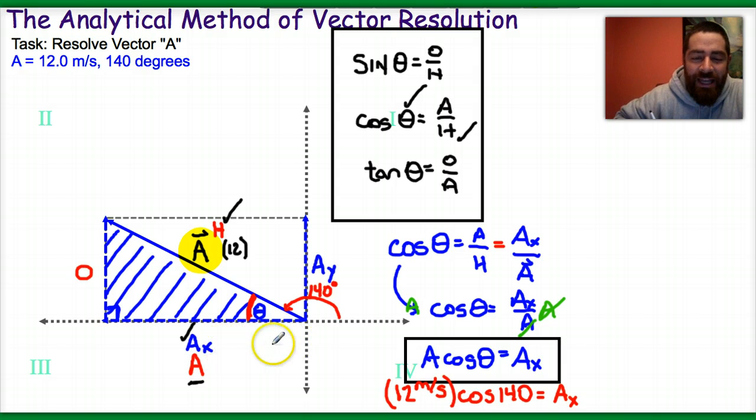Now simply looking at the x component of A, you should recognize that it's pointing to the left on the horizontal axis, so it should be negative. So when I basically plug this into my calculator, I get something on the order of negative 9.2, and of course our units are still meters per second. So that's the cosine function, and that answers the question about the horizontal component.